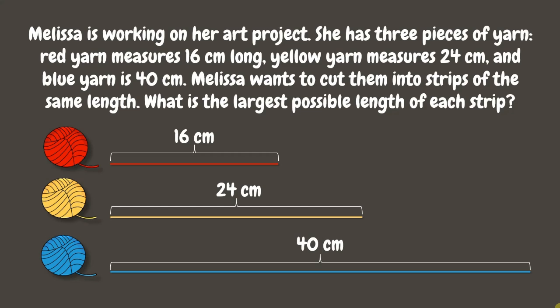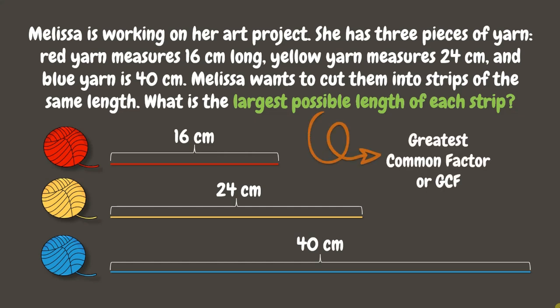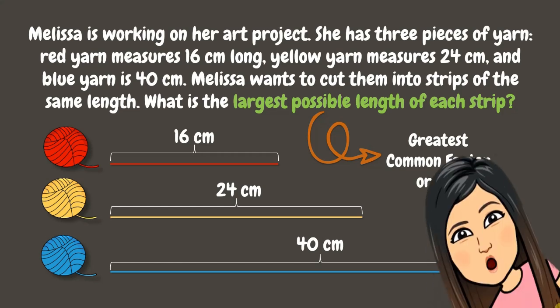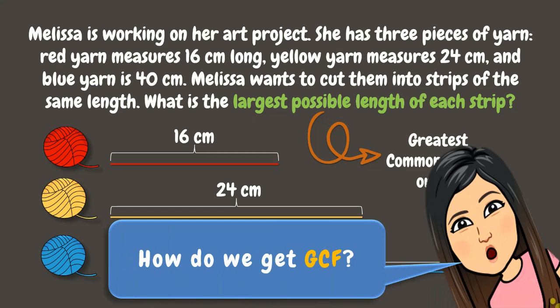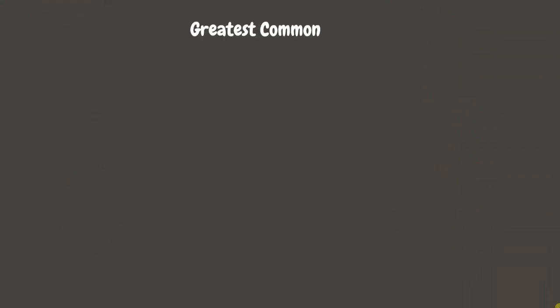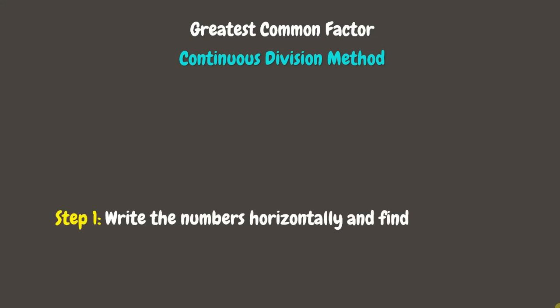The problem is asking for the largest possible length of each strip. This means that we need to find the Greatest Common Factor or GCF of 16, 24, and 40. We can determine the Greatest Common Factor using the Continuous Division method. Step 1: Write the numbers horizontally.